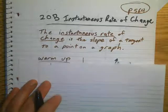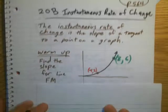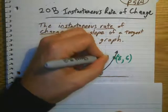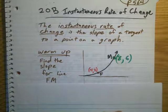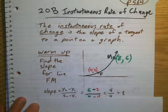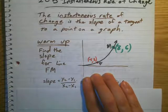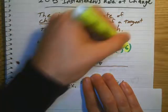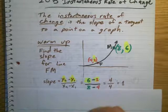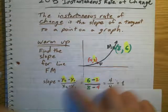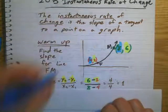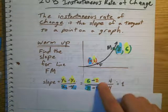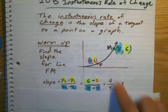So what does that mean? Let's do a warm-up. What if I asked you to find the slope for a line — let's label this one f, let's label this one m. How do we find the slope? Well, you learned in Algebra 1 that if I take the y values and subtract them, I would get 6 minus 2. And then in the denominator, if I take the x values, 8 minus 4. So if I do 6 minus 2 divided by 8 minus 4, we end up with a slope of 4 over 4, which is a slope of 1.